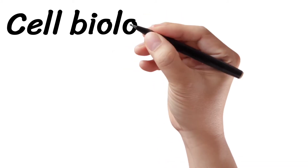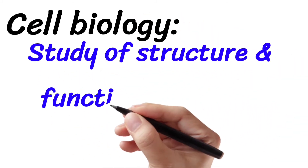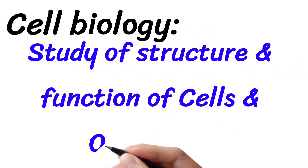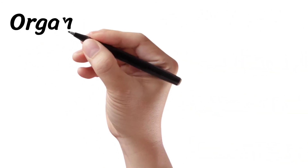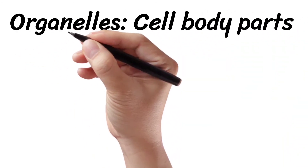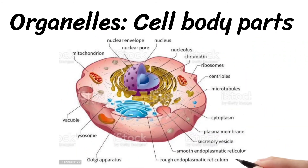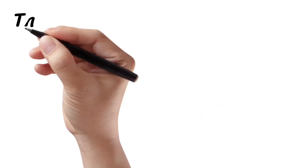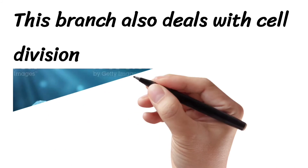Cell biology. It is the study of structure and function of the cell and organelles. Cell body parts are said to be organelles. For example, mitochondria, nucleus, and other organelles. This branch also deals with cell division.